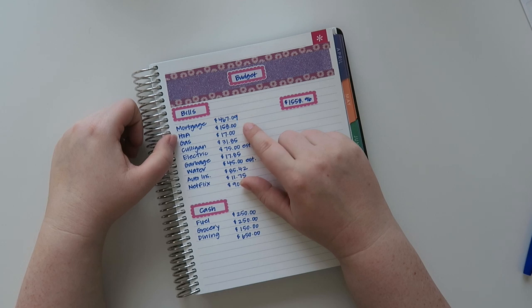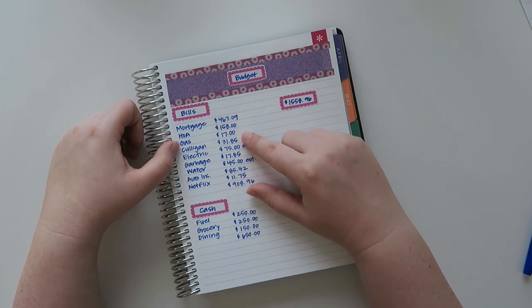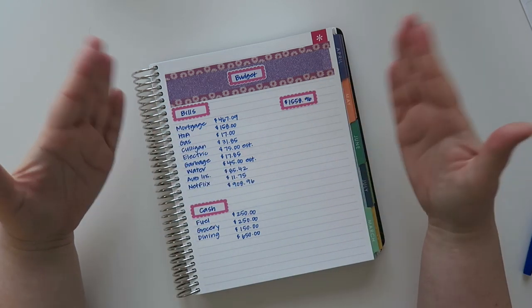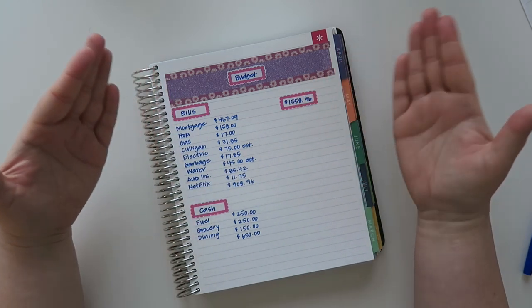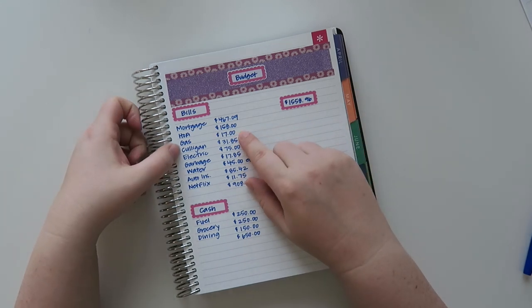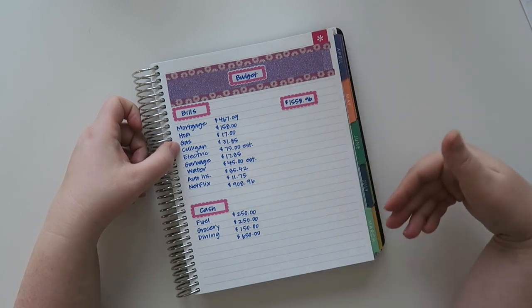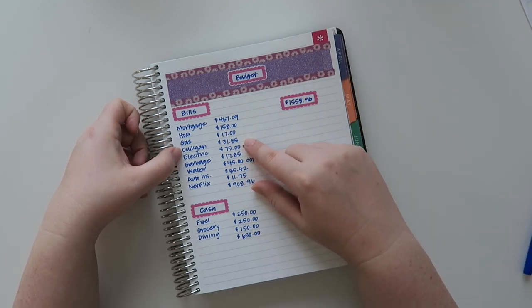My HOA is the same every month at $158. My gas actually went down. I'm on a flex plan, so they just average out for six months. It was $17 last month and that's what I'm anticipating again for this month. If it changes, I'll change it in March. Culligan is $31.85.